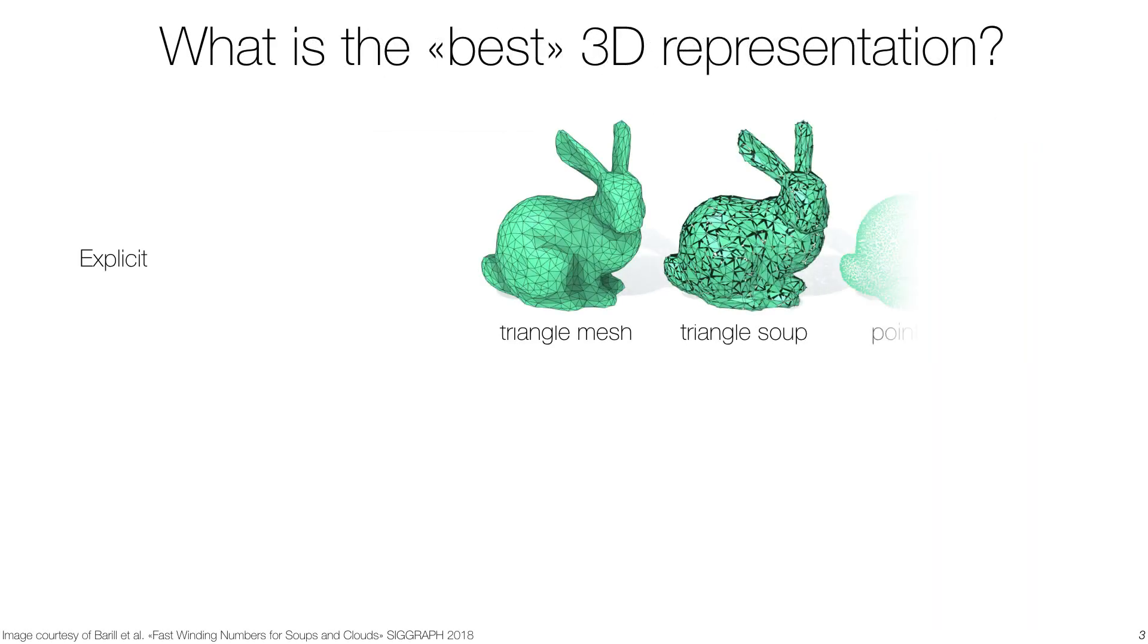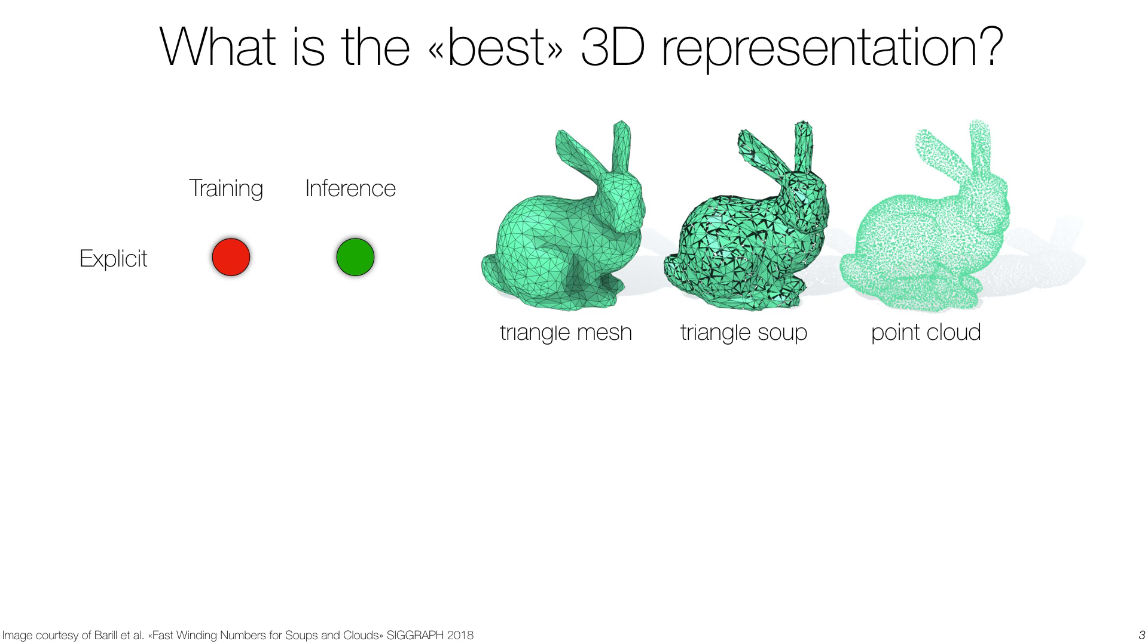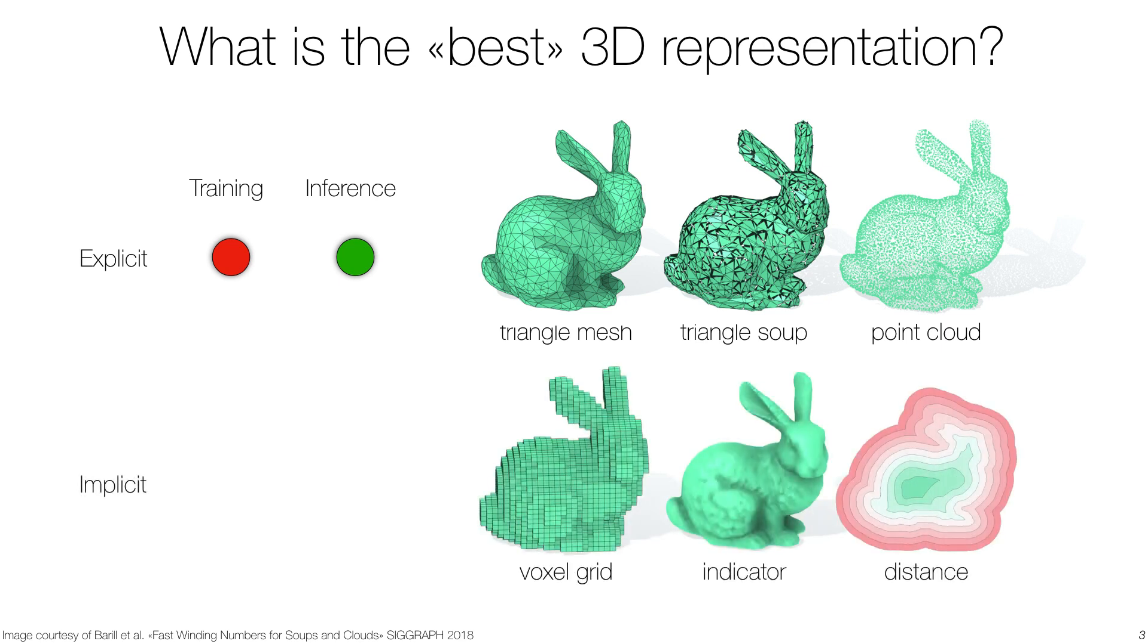When using traditional explicit representations, the inference phase is straightforward, but training requires careful treatment. When using implicit representations, training is cast as a standard classification task, but surfaces need to be extracted by marching cubes.